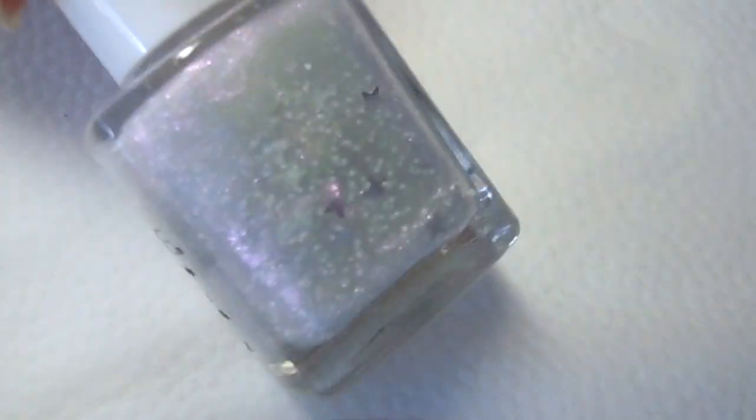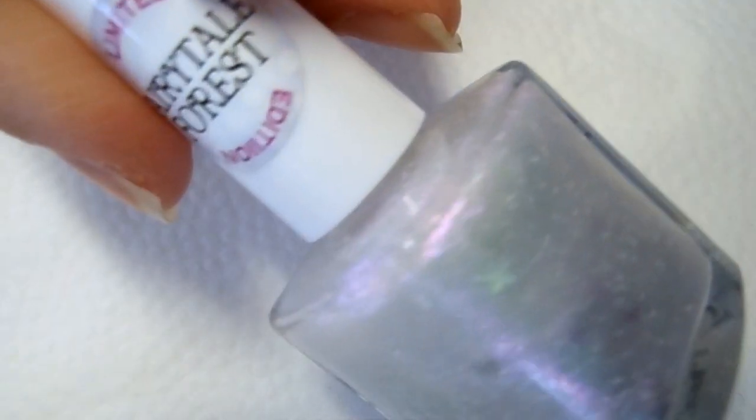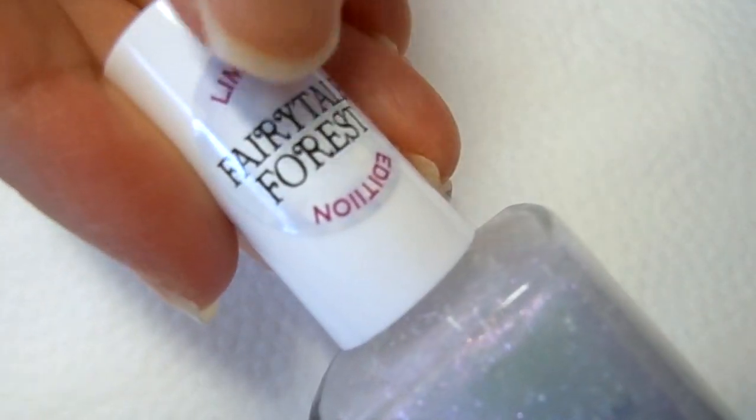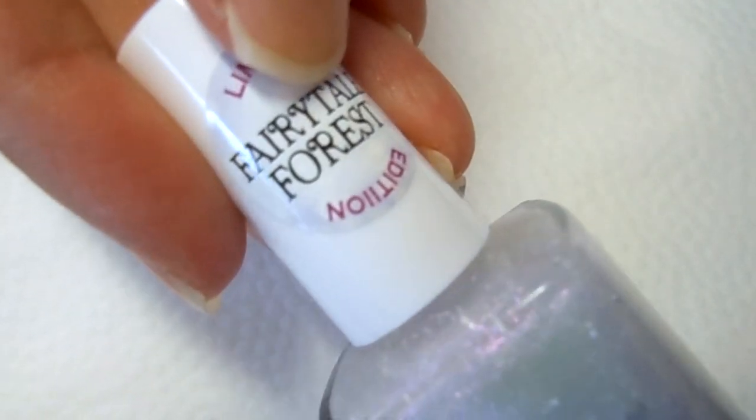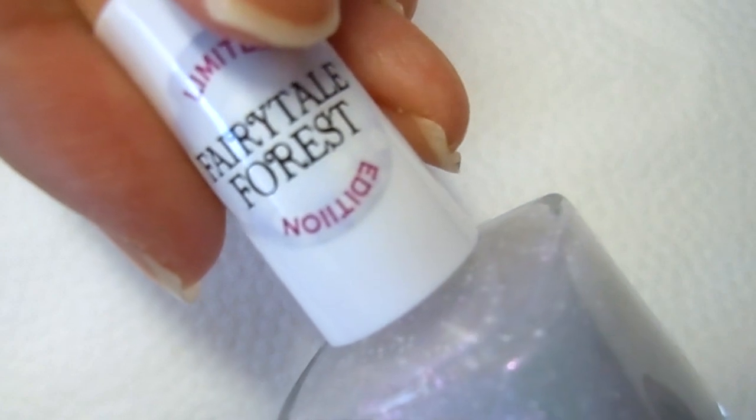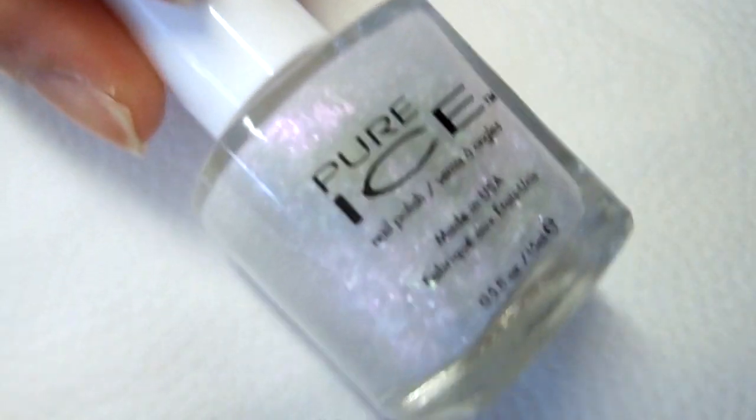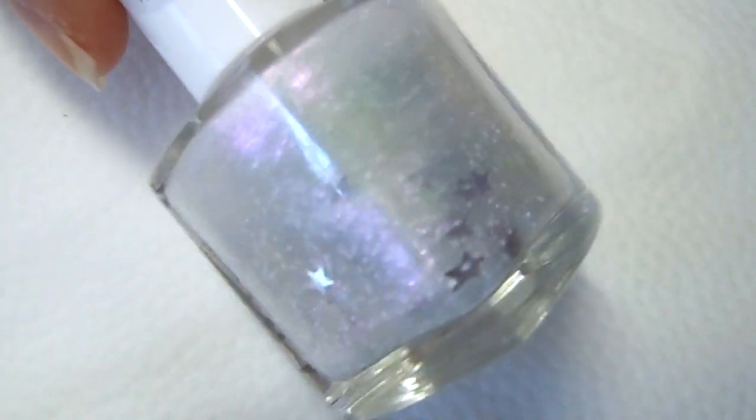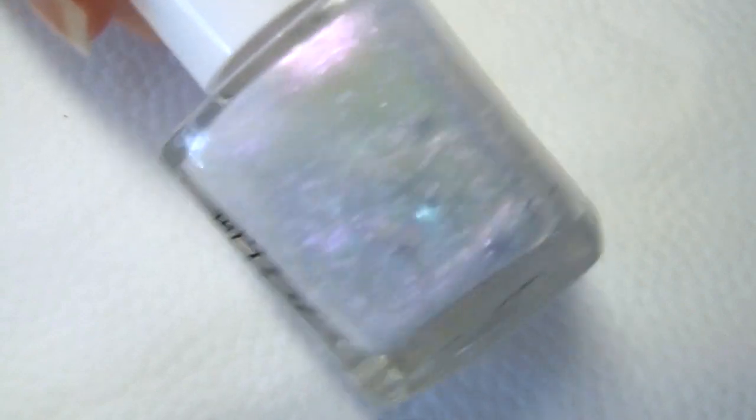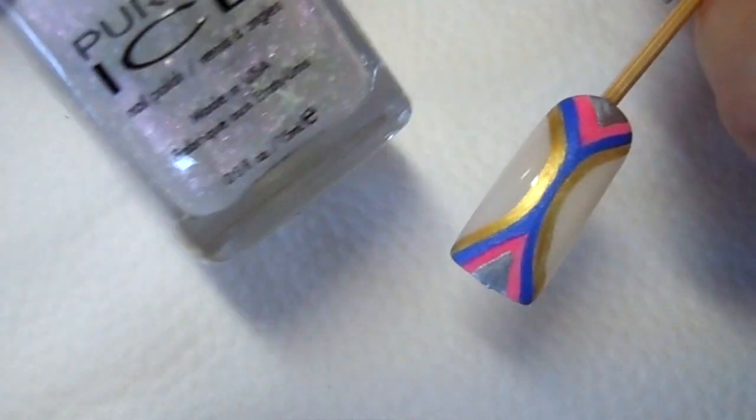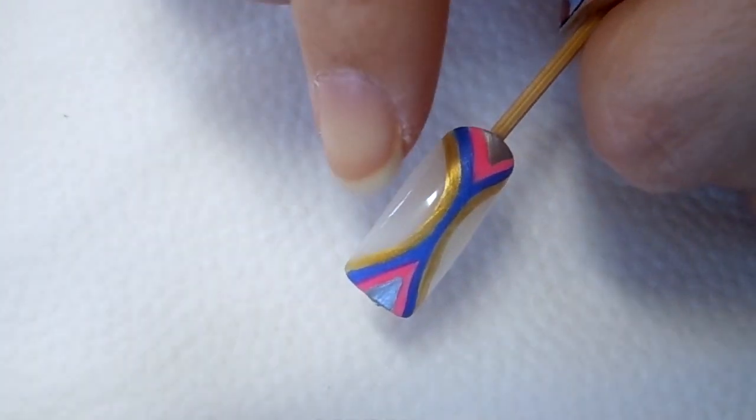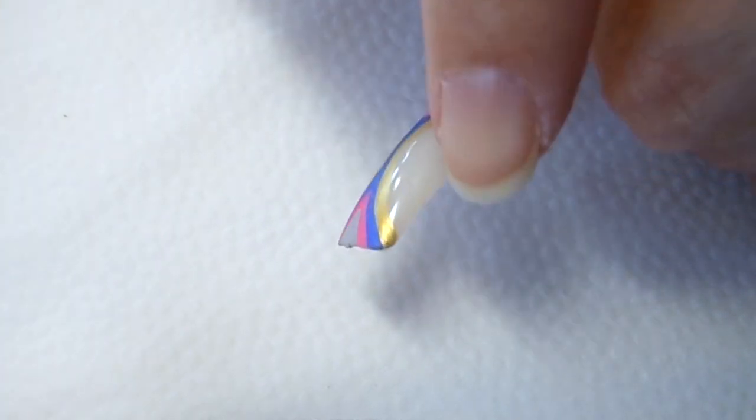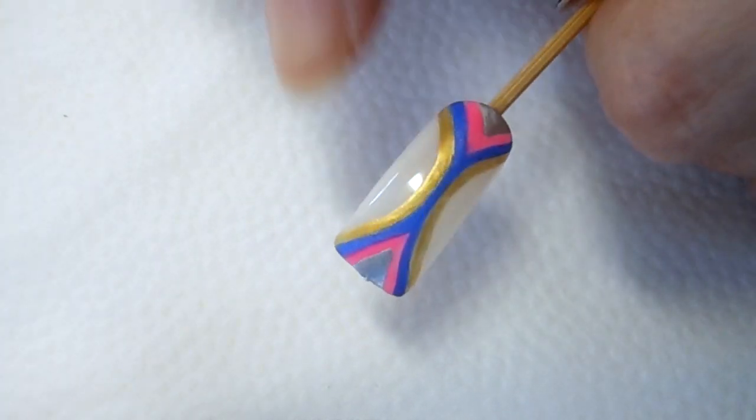Next we're going to go in with this polish. This polish is from Pure Ice. I'm not sure if it's still available. I will put the name in the description box down below. But you can use any nail polish that has this kind of iridescent shimmer to it. We're going to apply this polish to the two sides of the nail, like right here in this space and in this space.